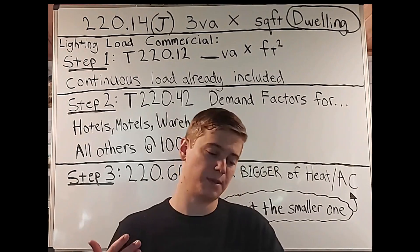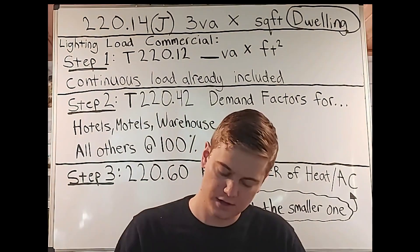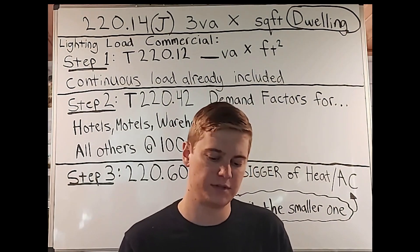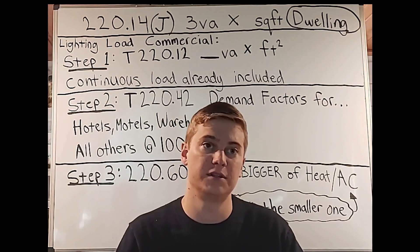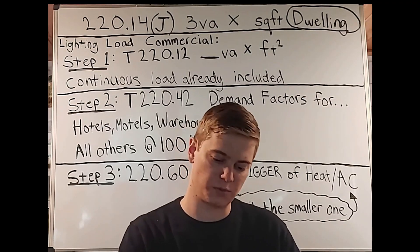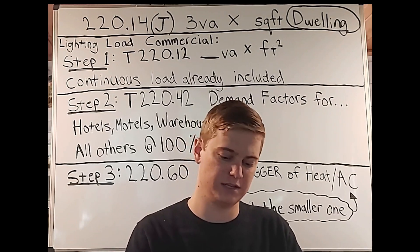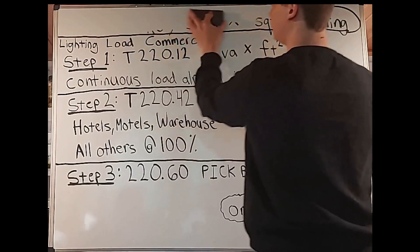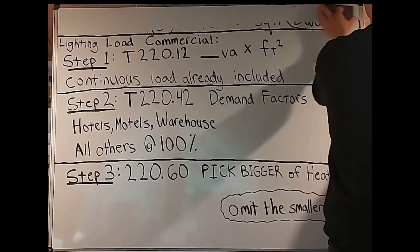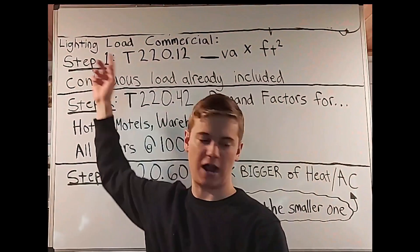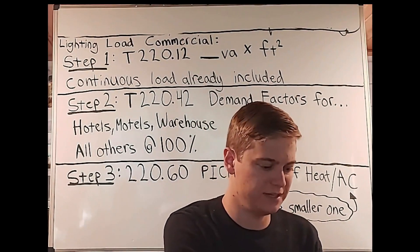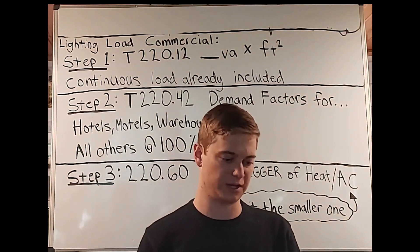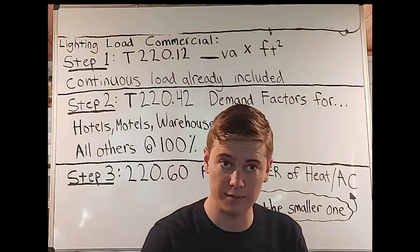This first one we know from the past — 220.14J — where it says dwelling units. This obviously doesn't apply here, but this is where we see the three volt amps per square foot. We're not going to use that unless we're dealing with dwelling units. Instead, for our lighting load, we're going to use article 220.12, lighting load for non-dwelling occupancies, which also has a table that accommodates this.